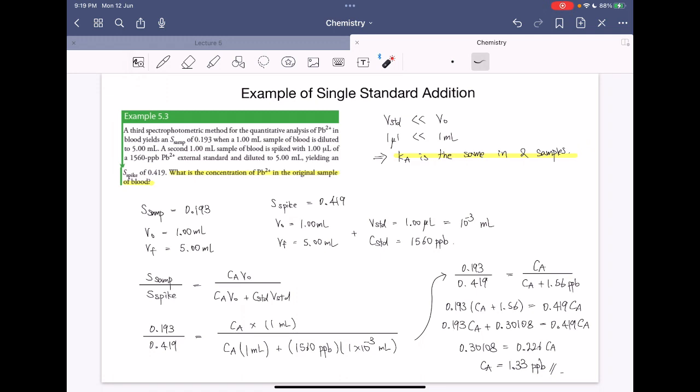So I'll say that one more time. The most important thing is that the volume of standard added is very small and the CA is the same in two samples. And the rest is just plugging in the equation. So hope you learned something in this video and thanks for watching.